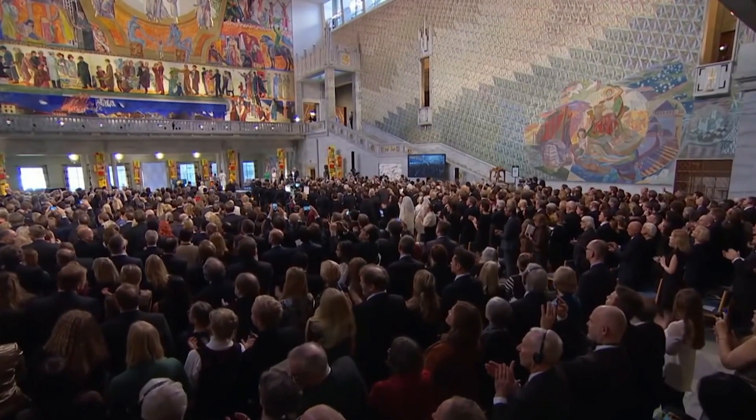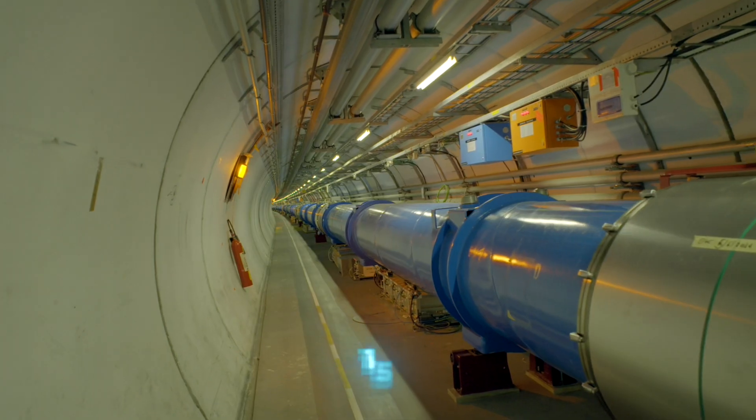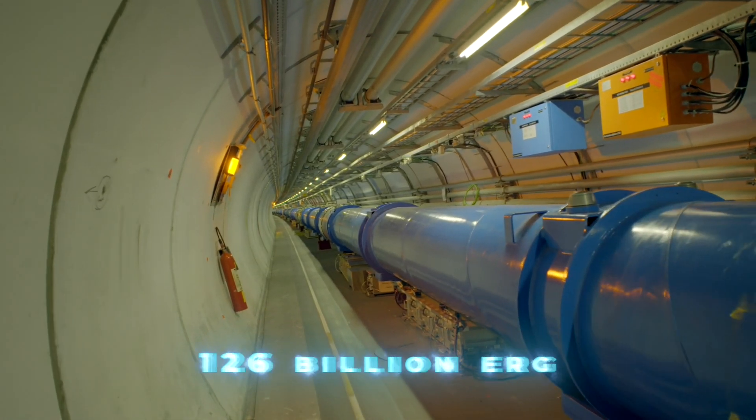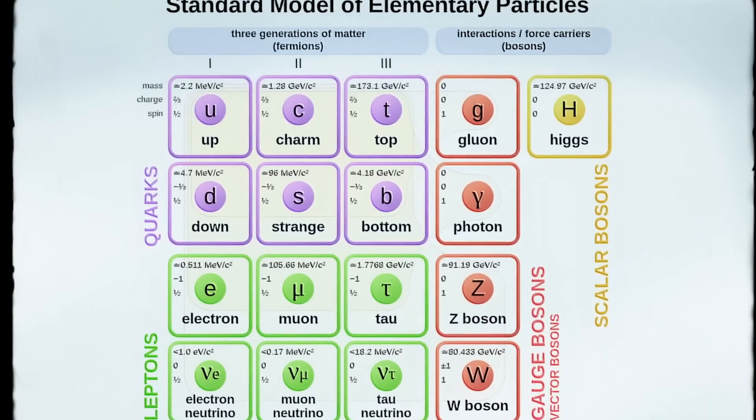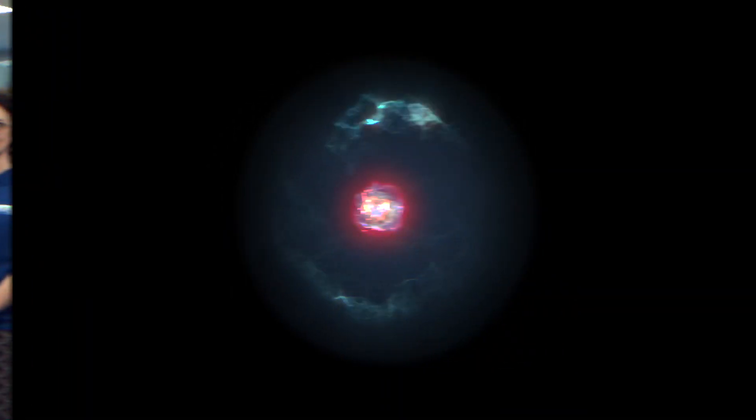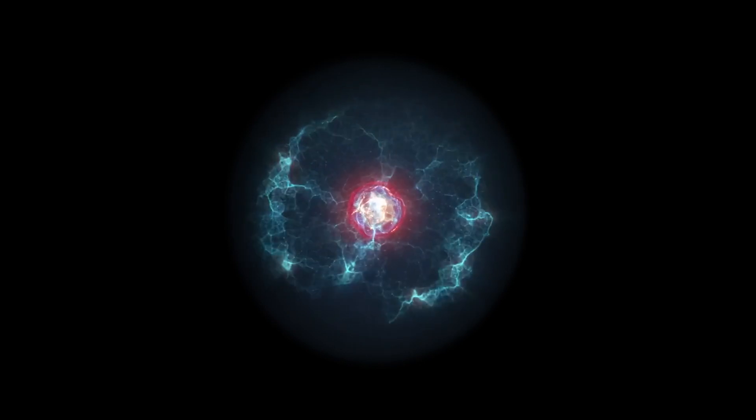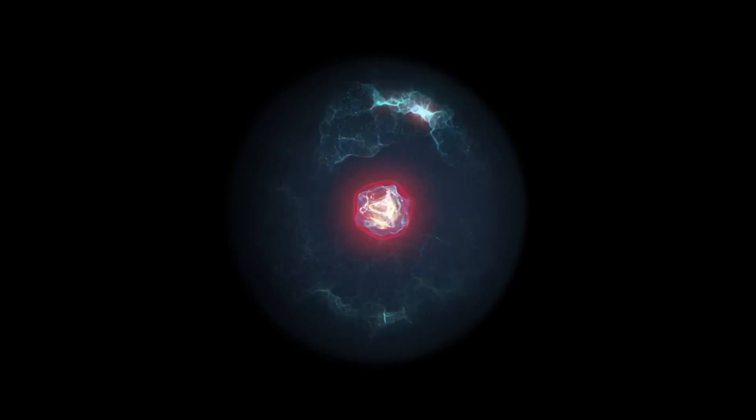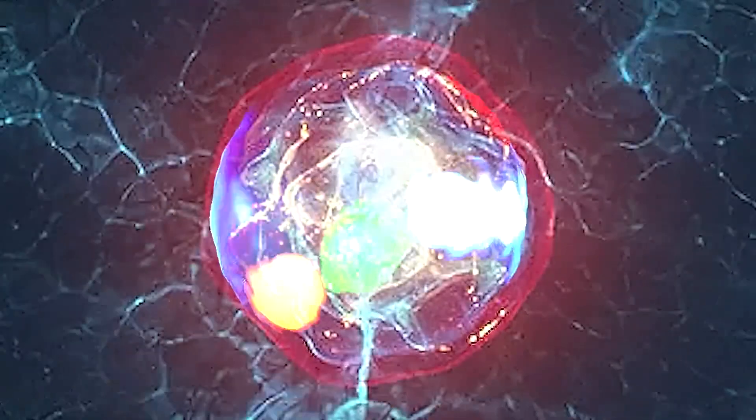When researchers detected the Higgs boson, they found that it had a mass of 126 billion electron volts, which turns out to be a much bigger deal than originally thought. This exact mass of the Higgs boson is needed to keep the universe stable. It's teetering on the brink of instability.